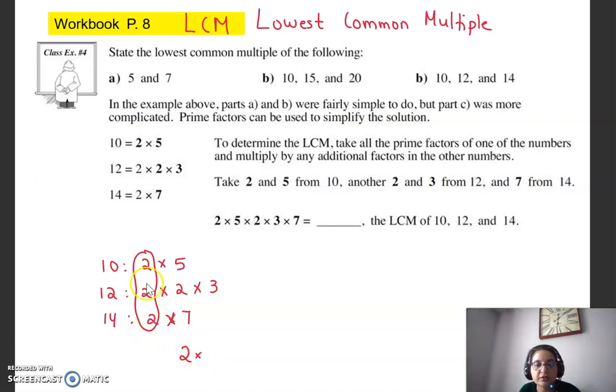Then my try is usually to see if there's something even common between two of them. So if there was like a five that was common here and here, I would only write it once. But I can see that nothing is actually common left anymore. So this five, there's not anything common with either 12 or 14. So it will also get included.